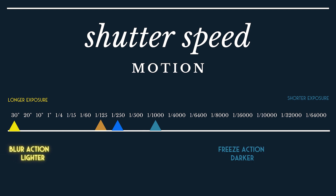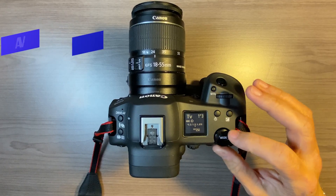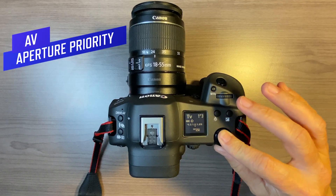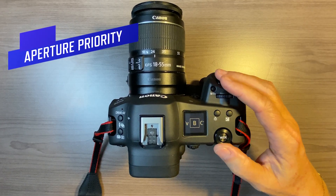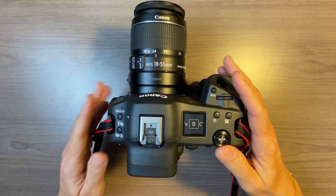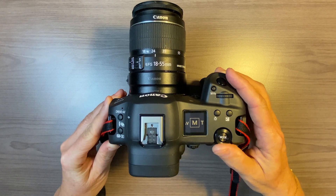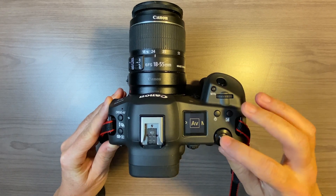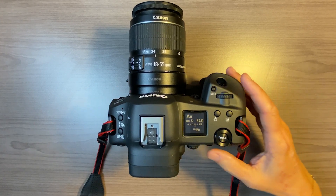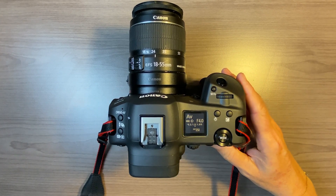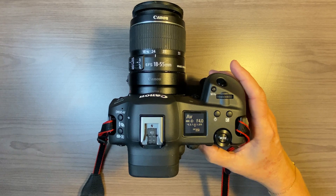If you use AV mode, which is aperture priority mode, you set the aperture — so you decide if you want depth of field or not in your picture — and then your camera will adjust the shutter speed automatically.